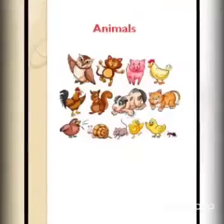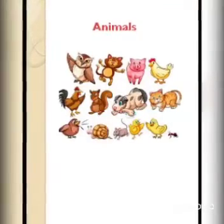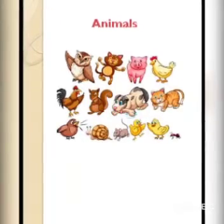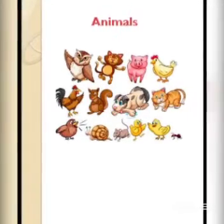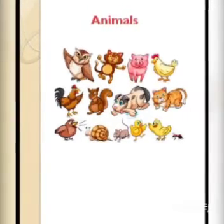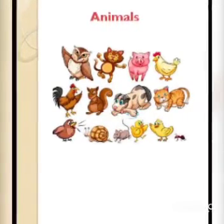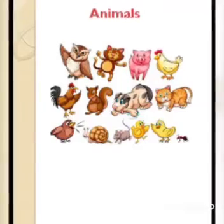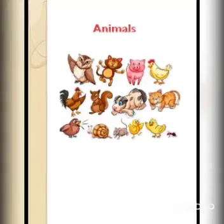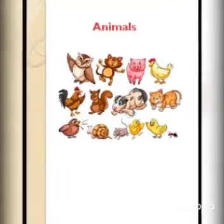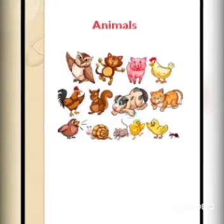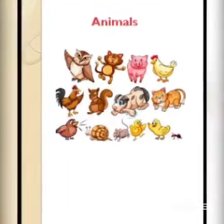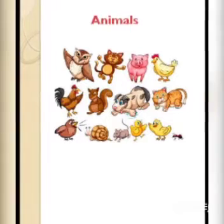The last one is animals. Here are some pictures of animals. So a naming word can be a name given to animals. For example, owl, hen, rabbit, rat, chicken, cat, dog.